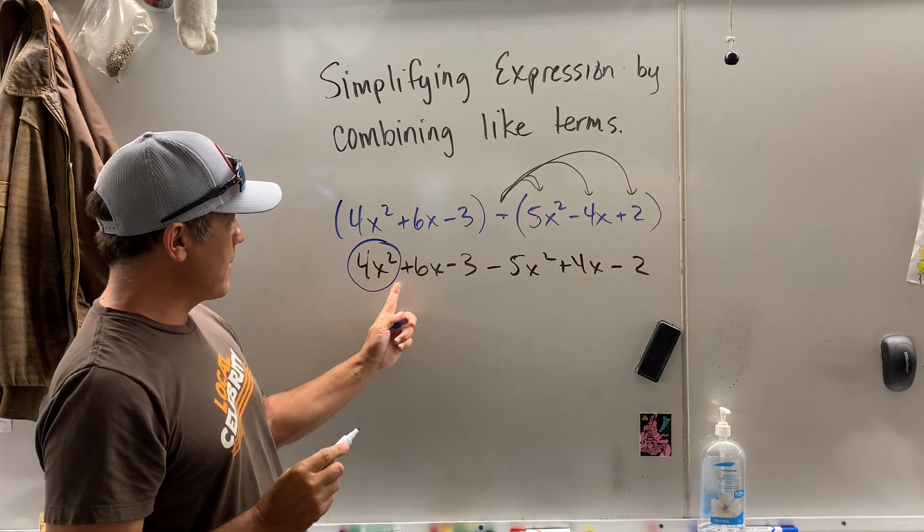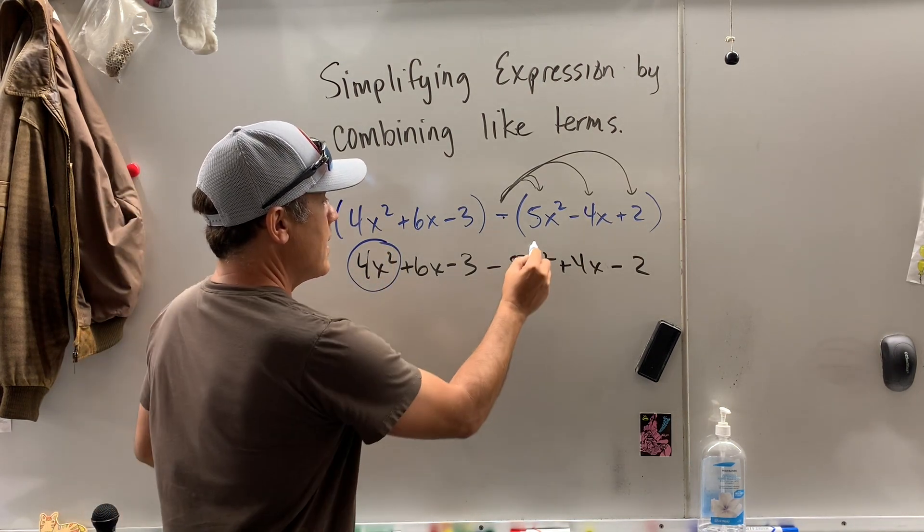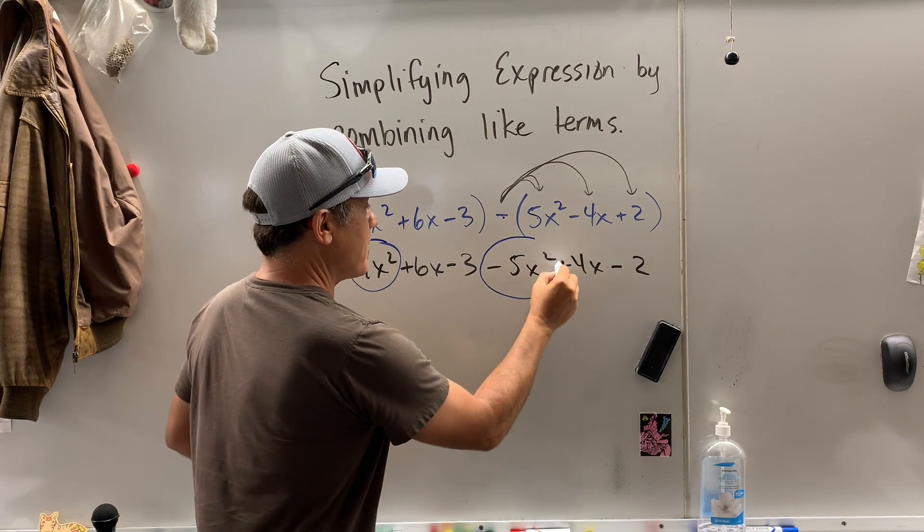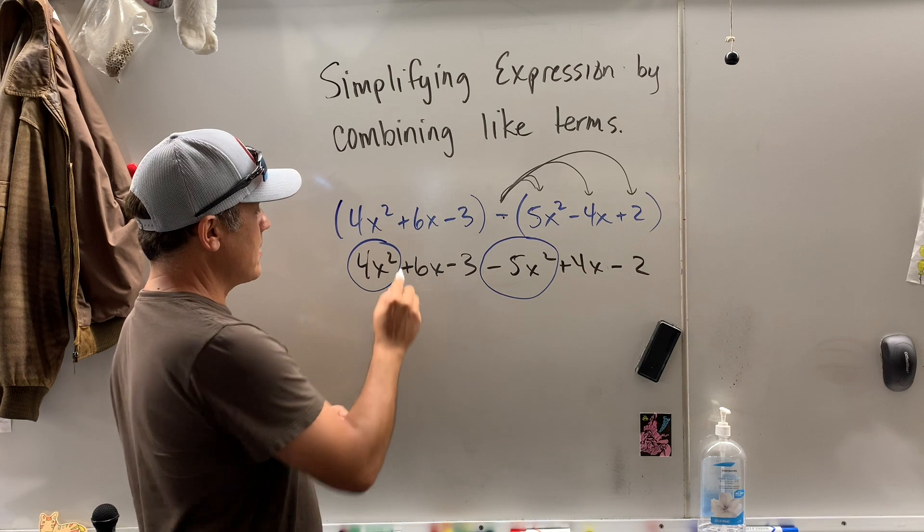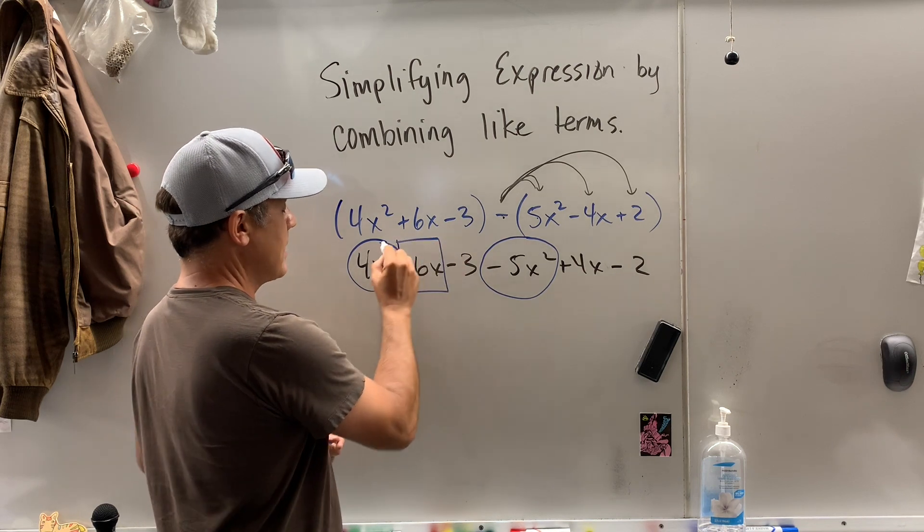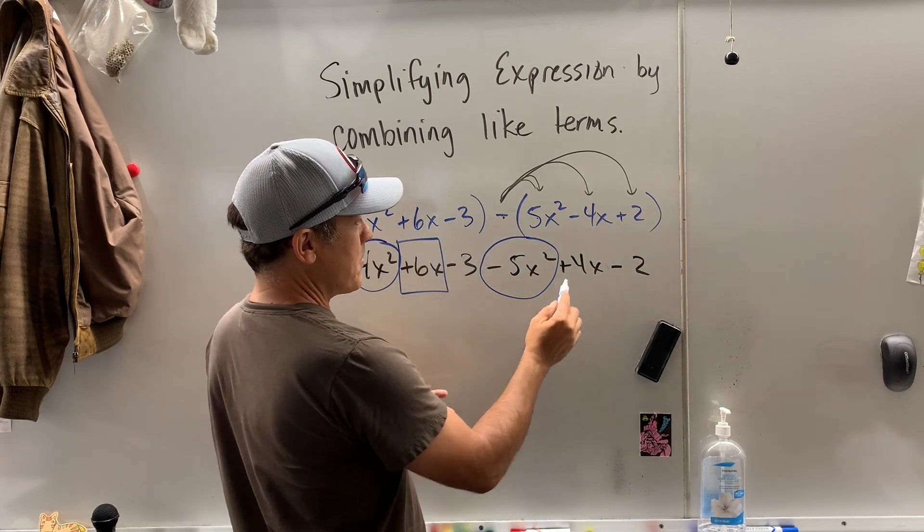Do I see any other x squared? Oh, right here. I got negative five of them there. Now I have six x's. So I'm going to put a box around it. And then I'm looking for other things with x's. Oh, right here.